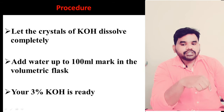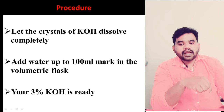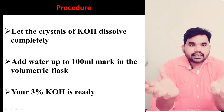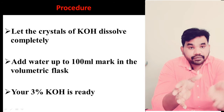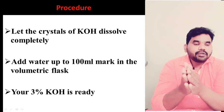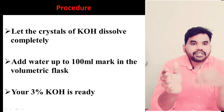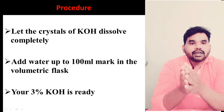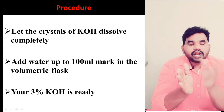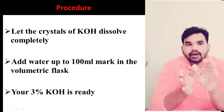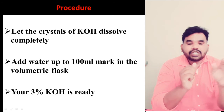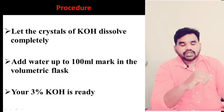Let the crystals of KOH dissolve completely, and add water up to the 100 ml mark in the volumetric flask. So after you have added the 3 grams of KOH to the 50 ml of water in the 100 ml volumetric flask and mixed it, when all the crystals are dissolved, add the extra amount of water and make the volume up to the 100 mark on the flask, and your 3% KOH is ready.